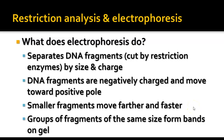Speaking of electrophoresis — the whole purpose behind electrophoresis is to separate DNA fragments, or any molecules, by size and by charge. DNA fragments are negatively charged, so when the electric current flows through the gel, they move toward the positive pole. The smaller fragments move farther and faster, and groups of fragments of the same or similar size form bands on the gel, indicating a particular DNA profile. The DNA profile is also called the DNA fingerprint, and these are unique to individuals.